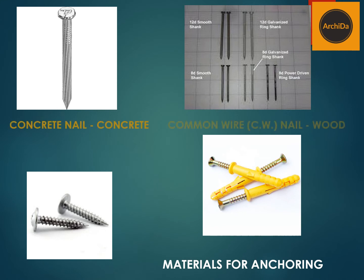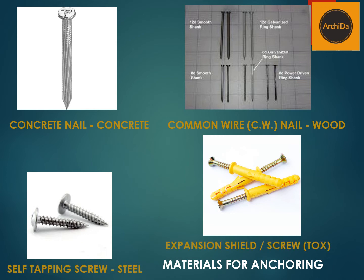How do you anchor your top and bottom tracks? If the flooring or the slab above is concrete, you use a concrete nail, or you may use the expansion shield or screw, commonly known as tux. Using an expansion shield requires drilling and screwing, unlike a concrete nail. If it is wood, you just use a common wire nail or CW nail. If it is going to be steel, you will use a self-tapping screw — it is called self-tapping because the thread runs up to the head of the screw.